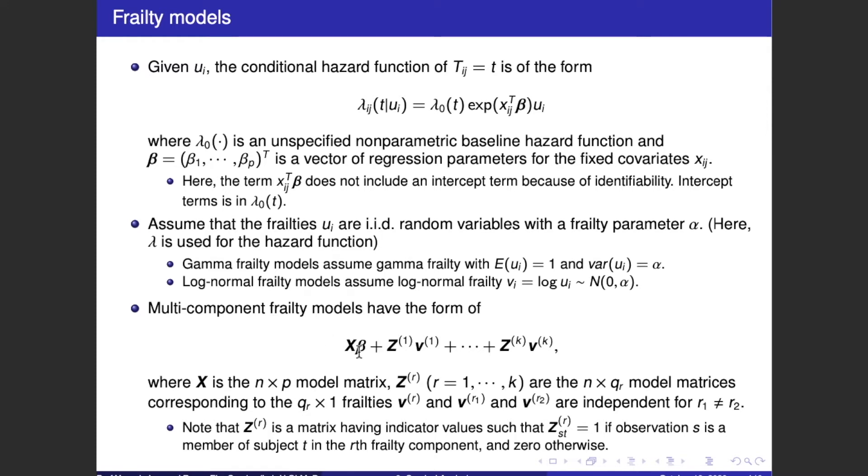Z^(r) for r from 1 to K are the n cross q_r model matrices corresponding to the q_r cross 1 frailties V^(r), and V^(r1) and V^(r2) are independent for r1 not equal to r2. Note that Z^(r) is a matrix having indicator values such that Z_s^(r) equals 1 if observation s is a member of subject t in the rth frailty component and 0 otherwise.